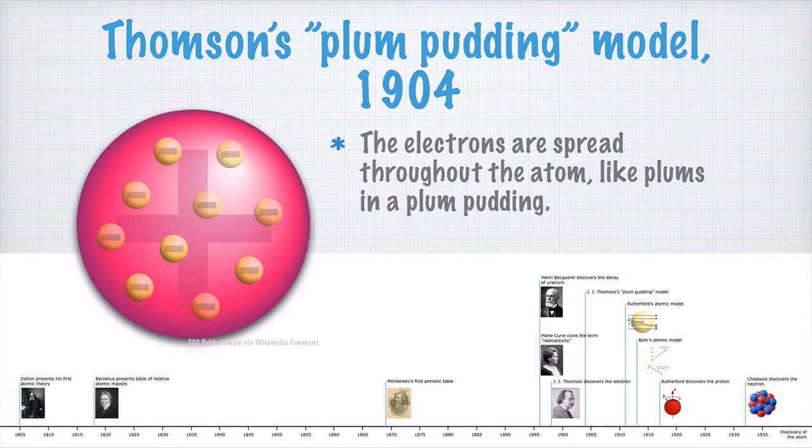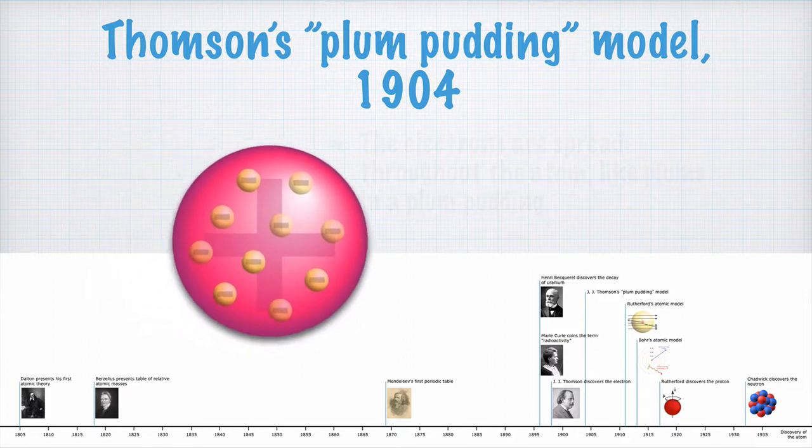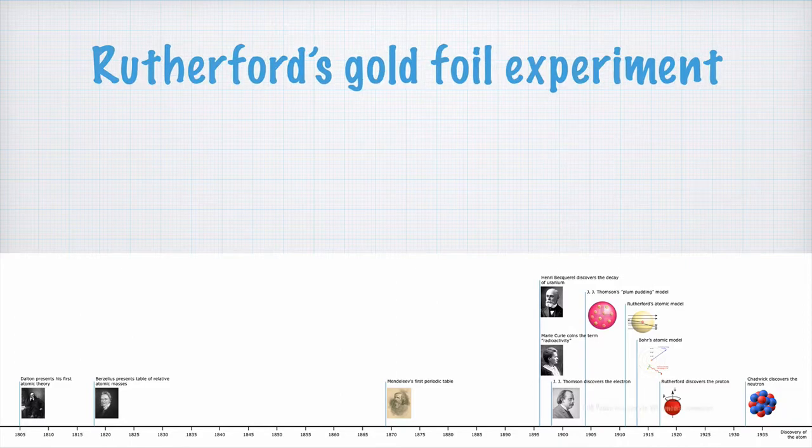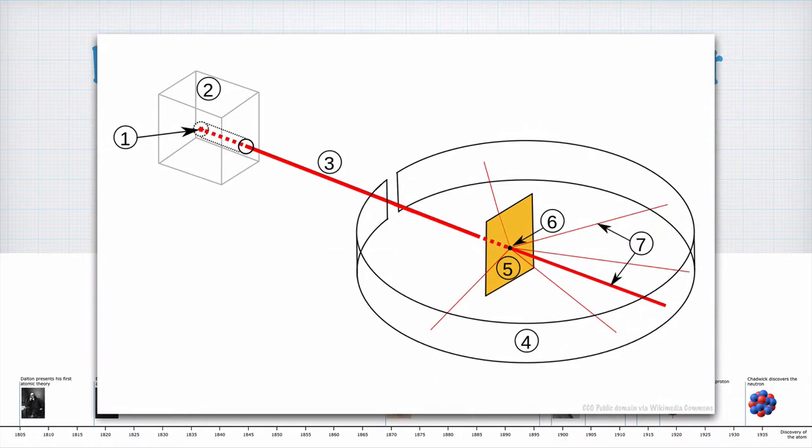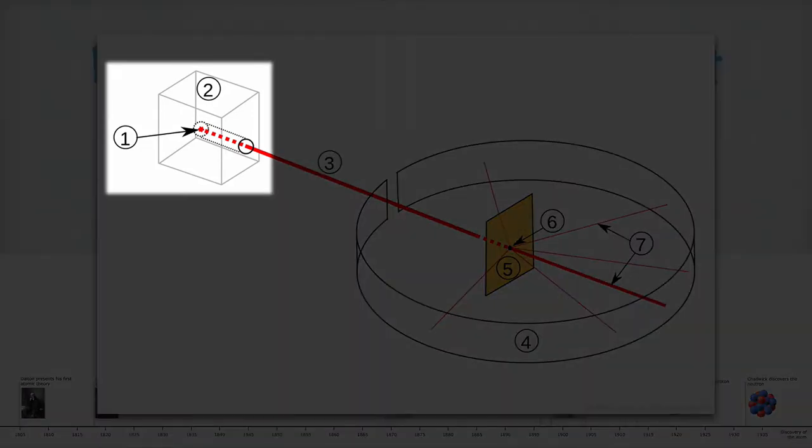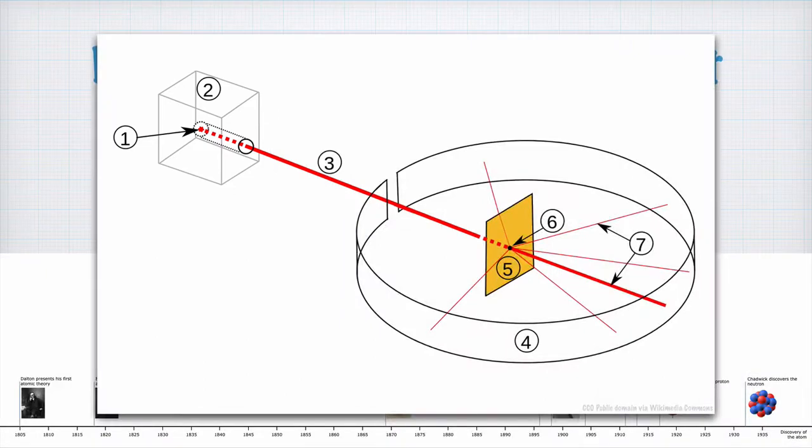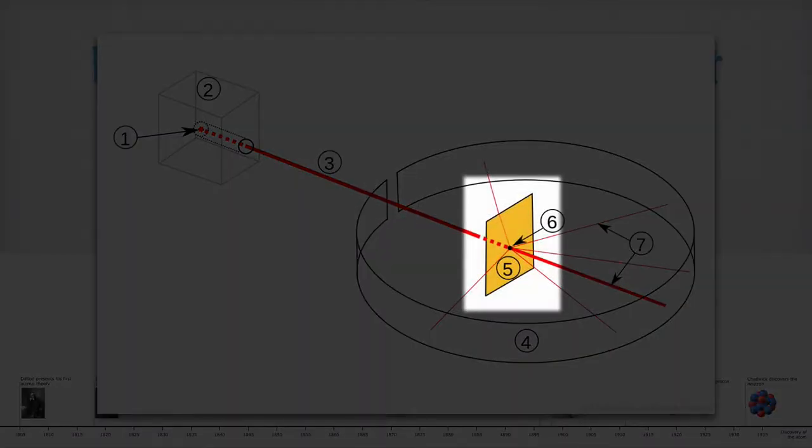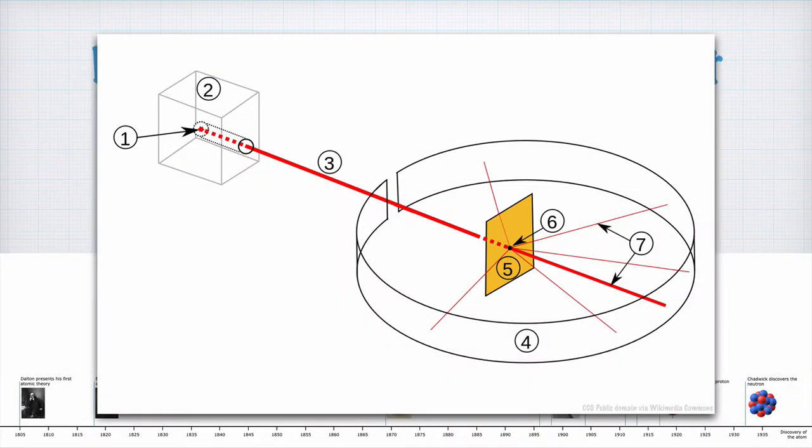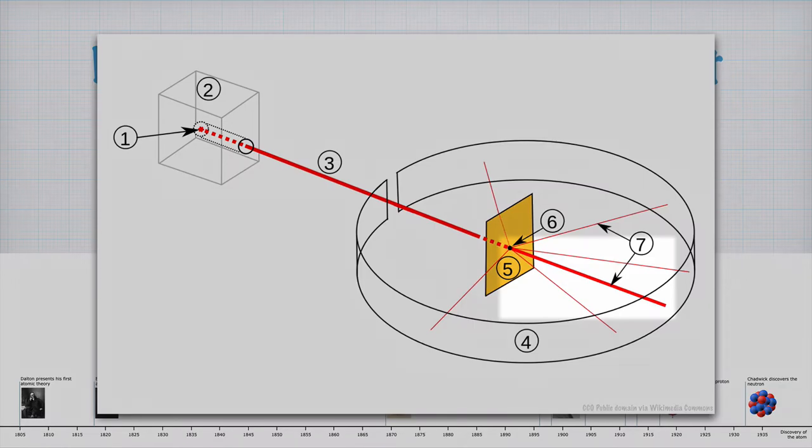Now, this was a good theory, but a theory always has to be tested with experiments. Another British scientist, Ernest Rutherford, performed a very elegant experiment. Here, you can see what it looked like. Over here, he had a radioactive sample that continuously sent out so-called alpha particles. They entered here, and hit a thin gold foil that was placed in the center. Now, if the atom looked like Thomson had proposed, the alpha particles should pass right through the thin gold foil. And, indeed, most of them did.